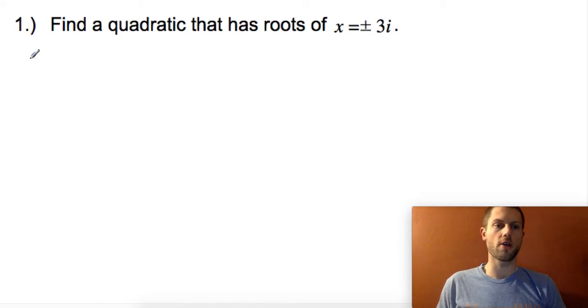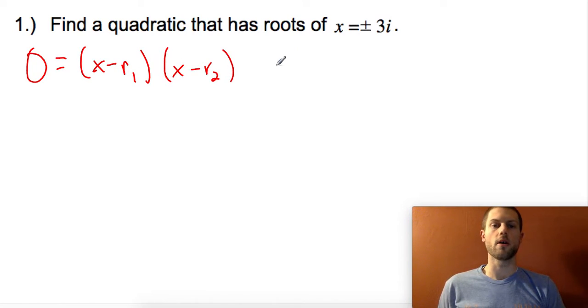Let's recall that any quadratic with roots r1 and r2 can be written as (x - r1)(x - r2). This is the factored form, where r1 and r2 are the roots.